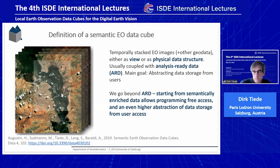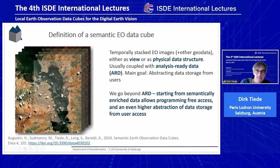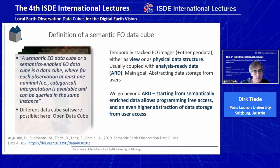How does it look? We have temporally stacked EO data — EO images — in a few or physical data structure, coupled with analysis-ready data. Craig already mentioned that the main goal is abstracting data storage from users: no one needs to care where the data is located — you draw your area of interest and work on it through time without caring how many datasets are used or how they are stored. With our semantic EO data cube approach, we want to go beyond analysis-ready data, starting from semantically enriched data, which allows programming-free access and an even higher abstraction. Instead of dealing with pixels in reflectance data, we use categories.